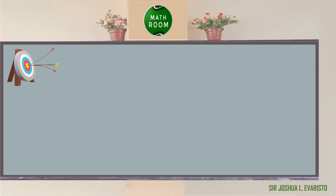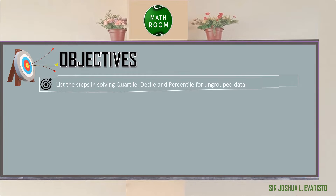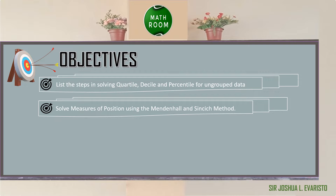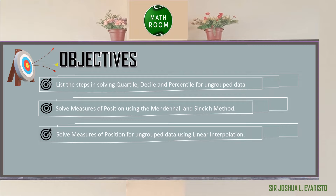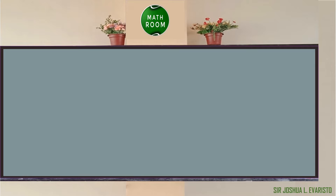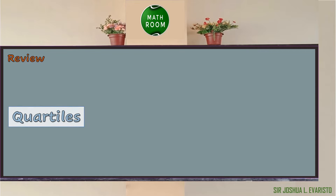Before we proceed, let me present our objectives. At the end of this lesson, you should be able to list the steps in solving quartile, decile, and percentile for ungrouped data, solve measures of position using the Mendenhall and Sinsic method, and solve measures of position for ungrouped data using linear interpolation.